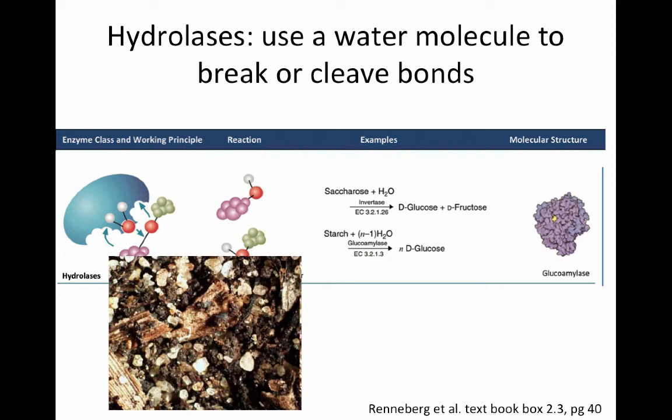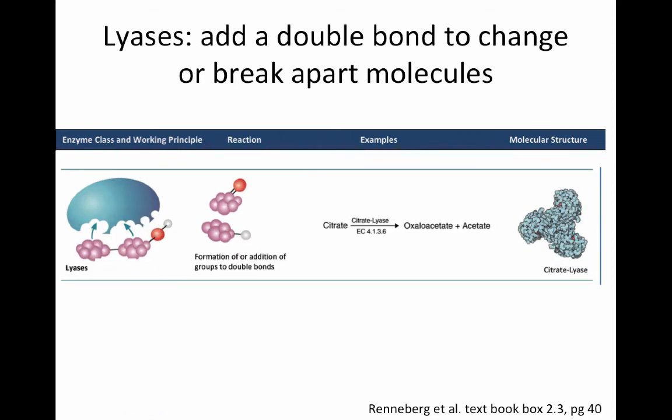The next class are lyases. Lyases add or break a double bond, and can break apart molecules in a different way than hydrolases. Here we see citrate sitting in a complex active site. This time there are no extra molecules used, but as the enzyme acts, the double bond formation of the oxygen on the molecule acts to break the molecule apart.